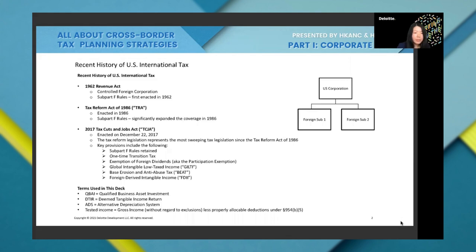After the one-time transition tax, if you want to actually repatriate earnings back to the U.S., it would be mostly tax-free, because the U.S. allows a dividend received deduction of 100%. And since all earnings were already taxed under the one-time transition tax, repatriation should be tax-free other than some foreign exchange gains and losses.